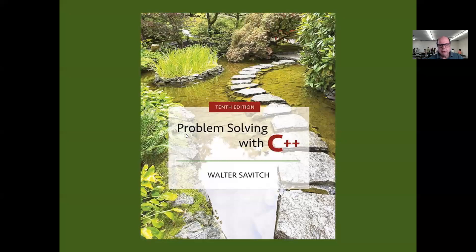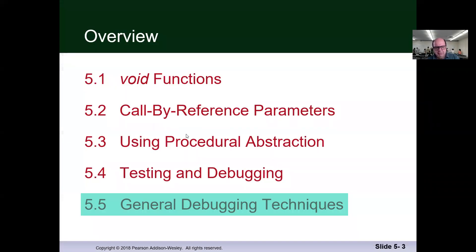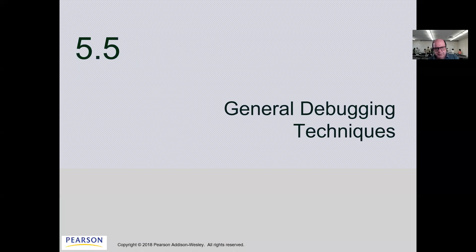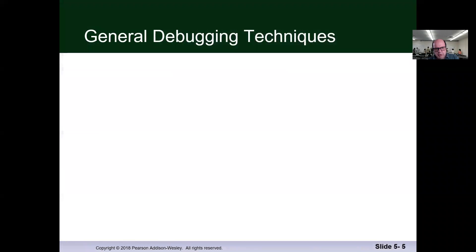Hi. We want to talk about Section 5, the last section for Chapter 5 in Savage Book. It's a very short section, but you're going to go through it. So it's talking about the general debugging techniques.